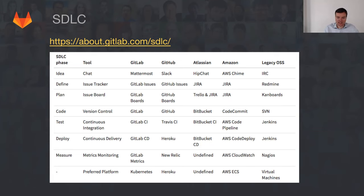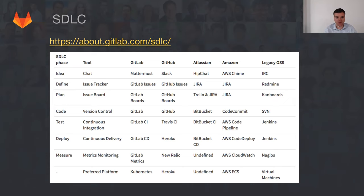The DevOps lifecycle is so complex and bothersome to set up — I think there should be a product that helps you with it. Open source allows the best developers in the world to collaborate on one product and make it better. I think that's a winning strategy.